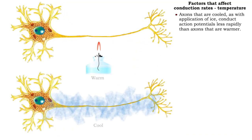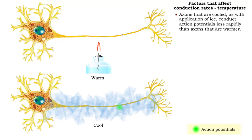Axons that are cooled, as with application of ice, conduct action potentials less rapidly than axons that are warmer.